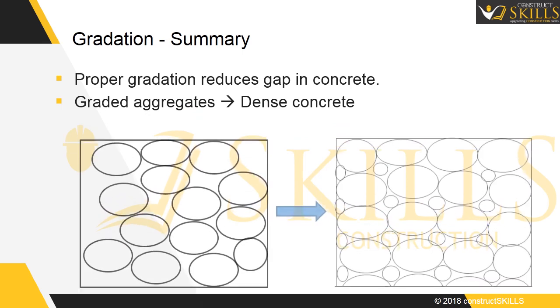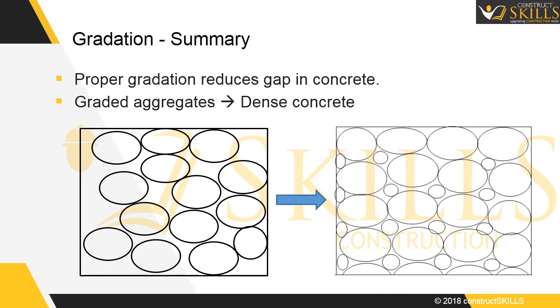Poor graded concrete contains particles of the same size, leaving large voids in the concrete. Gap graded aggregates have intermediate-size particles missing, leading to higher consumption of cement.